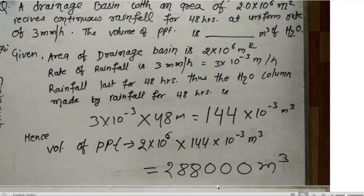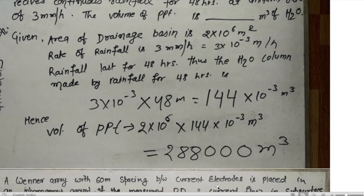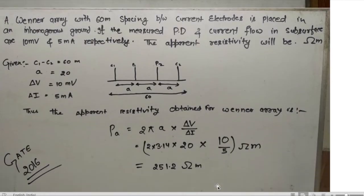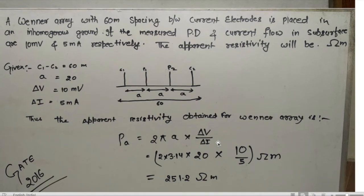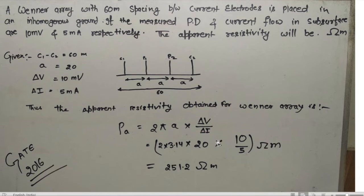Moving to the next question from geophysics. There are different types of arrays in resistivity survey: the Wenner array, Schlumberger array, pole-dipole array, and pole-pole array. In the case of the Wenner array, the current electrodes and the potential electrodes are fixed at the same distance.